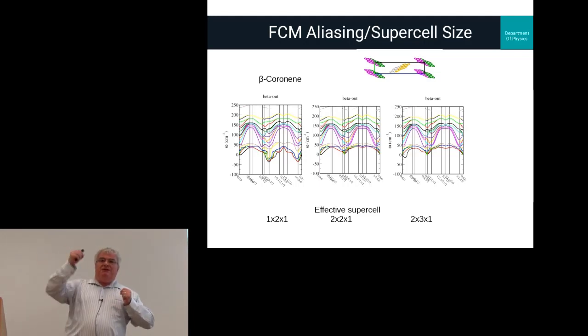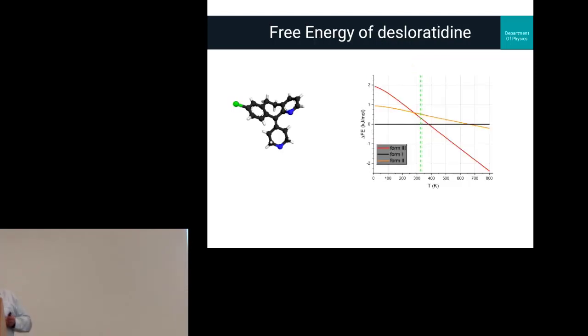Coronene is a pretty pathological example because it's this great big rigid molecule. If you push one side of it, the other side moves. The force constant matrix is very long range within the molecule and only falls off when it comes to the intermolecular gap. We have some long range convergence issues with this rigid flat planar molecule.